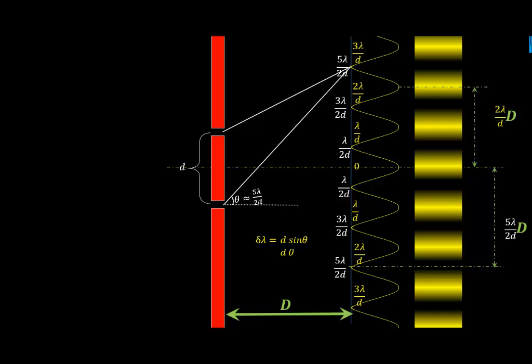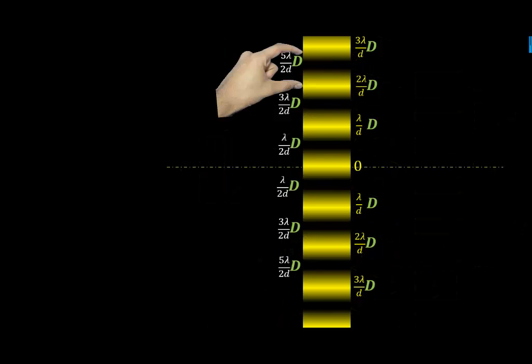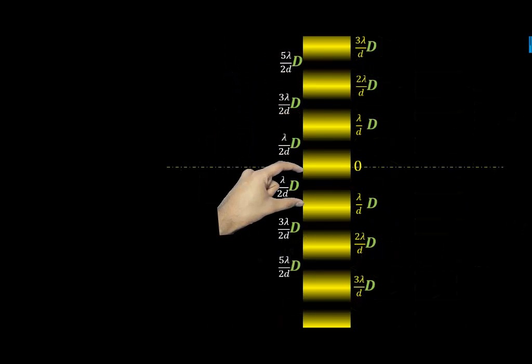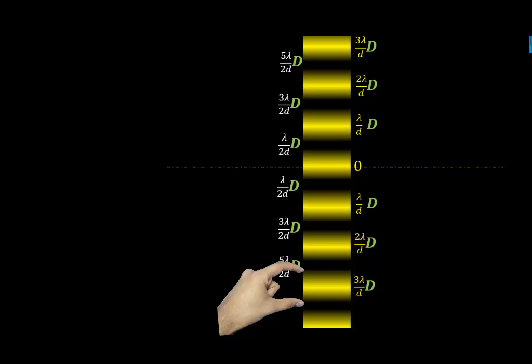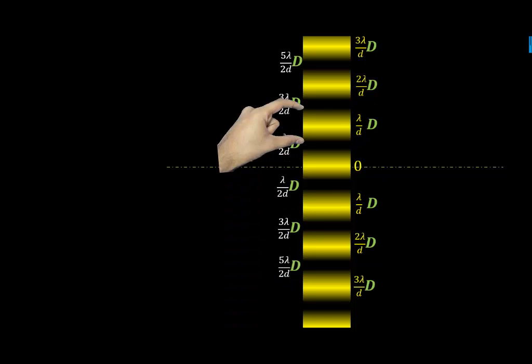We get linear distances from the center of the screen. And then we define fringe width linearly which is the distance between any two consecutive maximas or minimas and you can see it turns out to be λD divided by d.